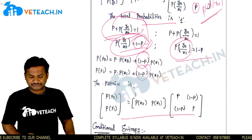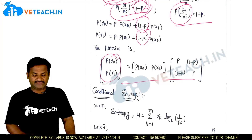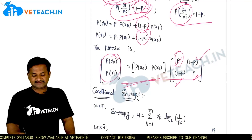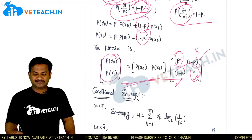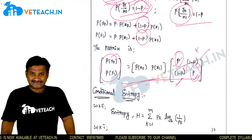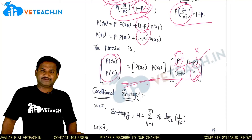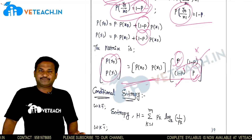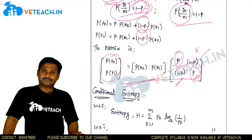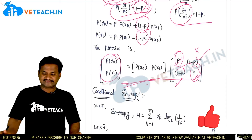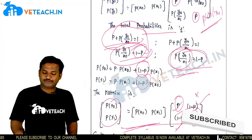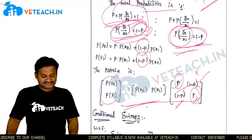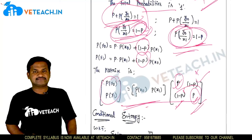Therefore the channel matrix for the binary symmetric channel becomes: [p(y0), p(y1)] = [p(x0), p(x1)] multiplied by the matrix [[p, 1−p], [1−p, p]]. This is the binary symmetric channel representation, where p(y1|x0) = 1−p and p(y0|x1) = 1−p. This is a discrete memoryless channel where errors may occur.